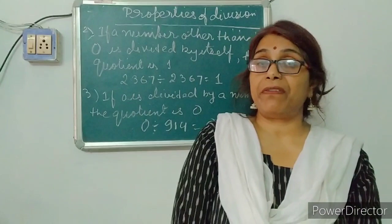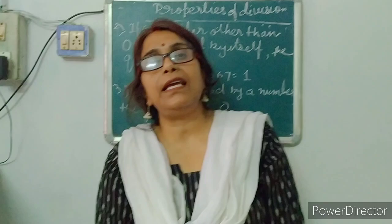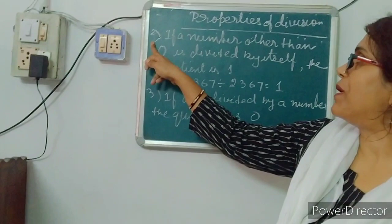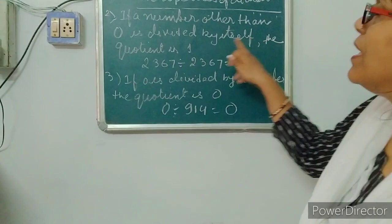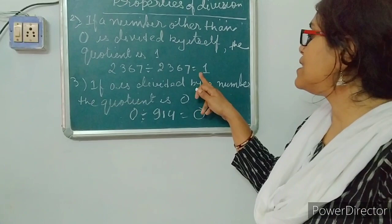The second property of division is: if you divide a number by the same number, the quotient is 1. If a number other than 0 is divided by itself, the quotient is 1. For example, 2367 divided by 2367 is equal to 1.